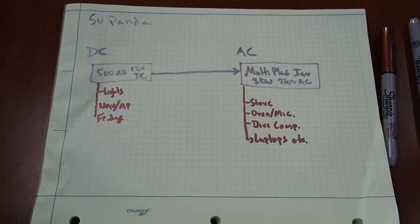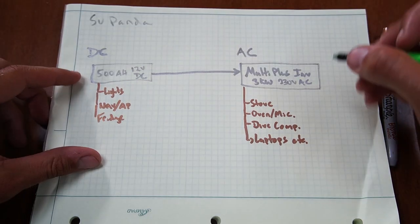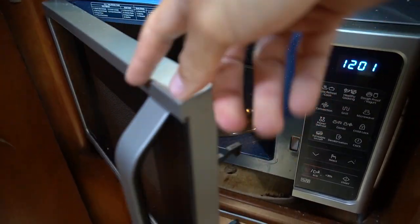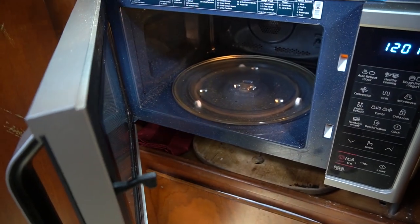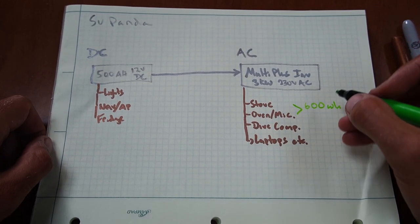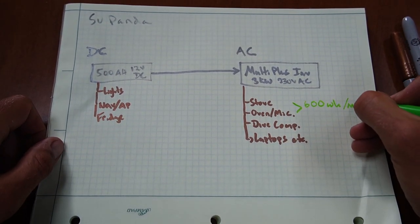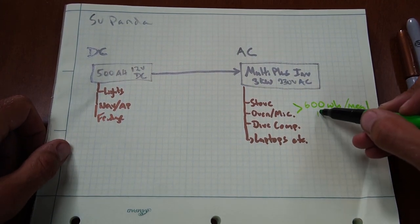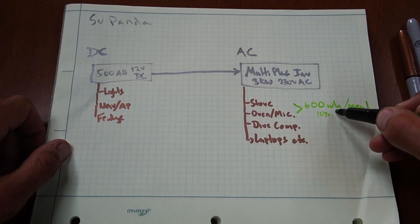And let's talk about how much each thing uses, and then we'll talk about our energy in. On our stove and oven combination, we use about 600 watt hours per meal. So that comes out to about 10% of our battery capacity.